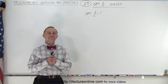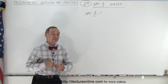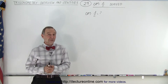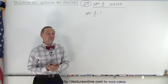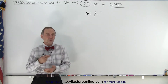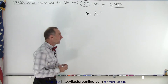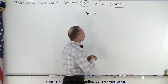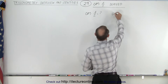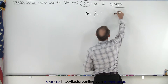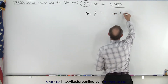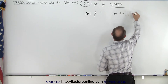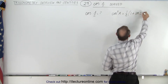Welcome to our lecture online. In the previous video we showed you how to find the sine of a half angle. Here we're going to find the equivalent expression for the cosine of a half angle, and we're going to use a similar method. We're going to start with the cosine square of angle A is equal to one half times one plus the cosine of 2A.